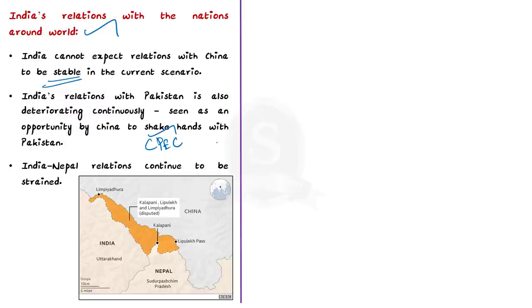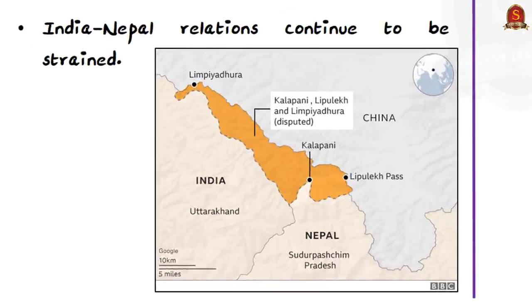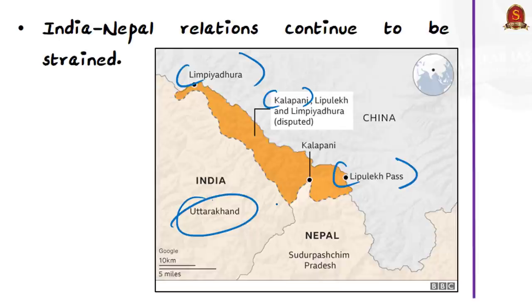Relations with Nepal continue to be strained. Nepal issued a new map showing Indian territory in Nepal, which was later legitimized unanimously by Nepal's parliament by including it in the national emblem. The new Nepal map shows the Kalapani area along with Limpiyadhura and the strategically located Lipulekh Pass in Uttarakhand as belonging to Nepal. Note that Lipulekh Pass location and its connection to Nepal can be asked as a prelims question.